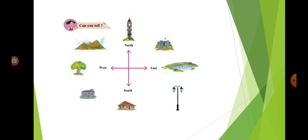Now, can you tell what can you see in this picture? You can see the four main directions: east, west, north, and south.